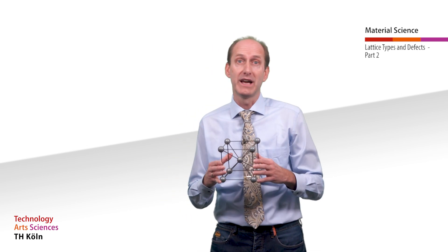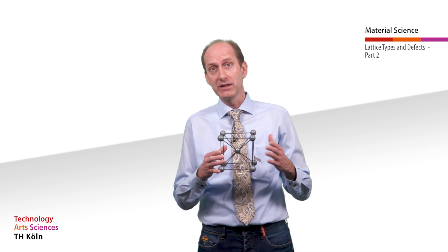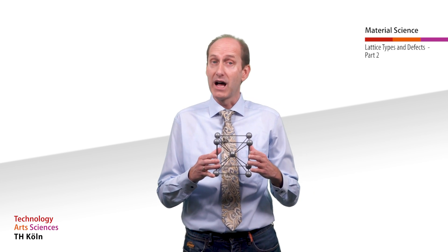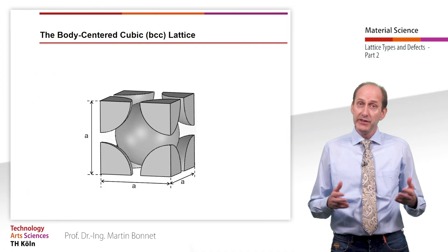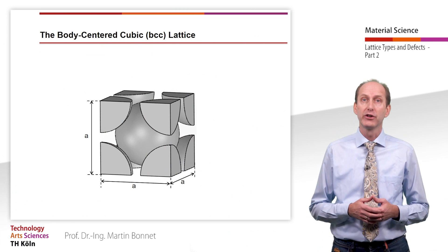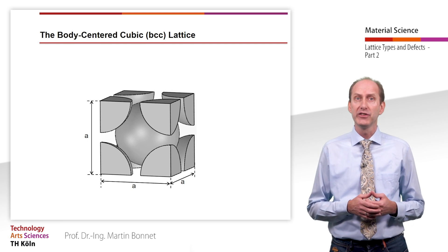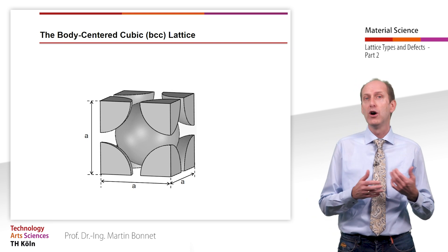The body-centered cubic lattice is also called a tungsten type, since tungsten is a metal with a BCC lattice. Other metals that are solid bodies with BCC lattices are alpha iron, chromium, niobium, molybdenum and tantalum. Since the BCC lattice has to share the atoms of the cube corners with the adjoining unit cells, it consists in total of two whole atoms.